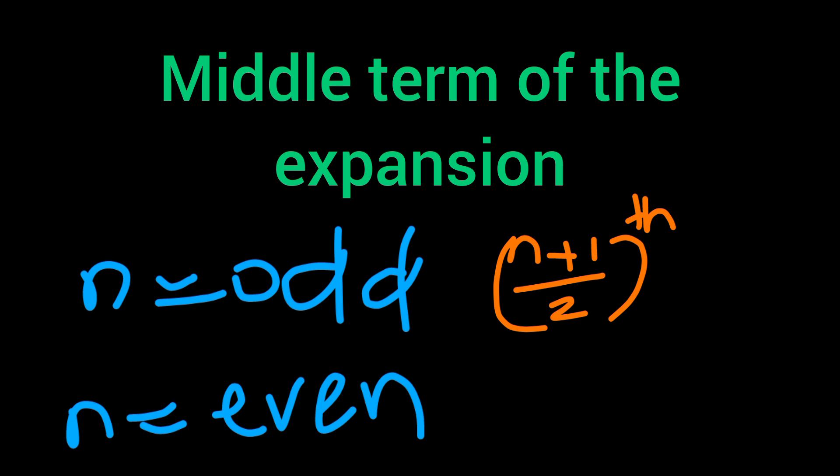For an odd N, the middle term formula is the (N+1)/2 th term. For even N, the middle terms are the N/2 th term and the N/2 plus 1 th term. So one odd number gives 2 middle terms, and one even number gives 1 middle term. Now we have to do the general term.